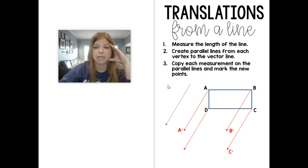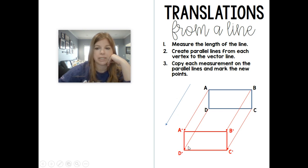C becomes C prime, D becomes D prime. You can almost see like it looks like I'm creating a 3D figure, and then that's where my new figure would be. So ABCD translated along this line would put it in this spot: A prime, B prime, C prime, D prime.